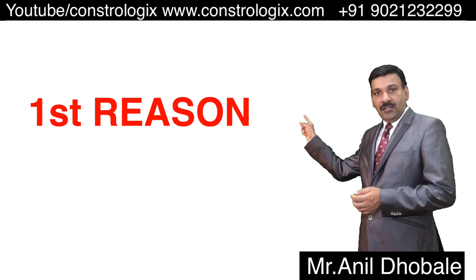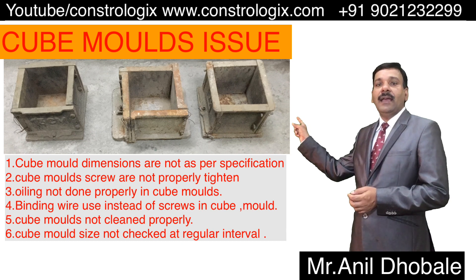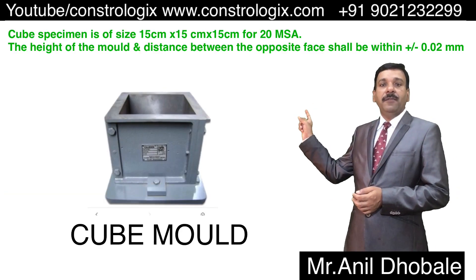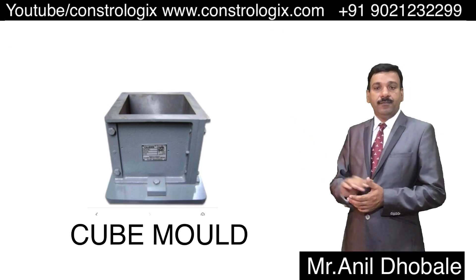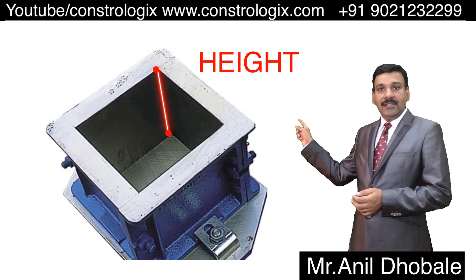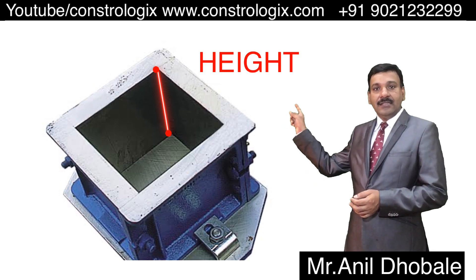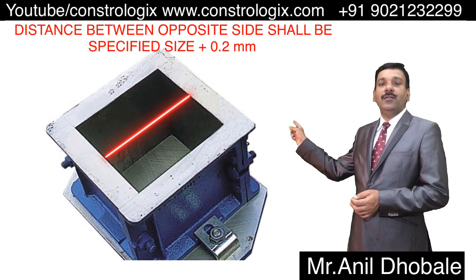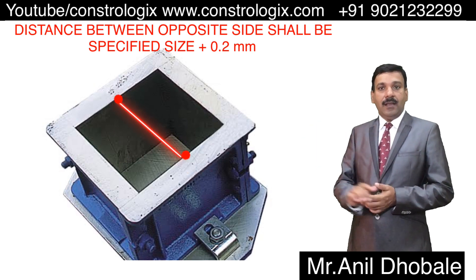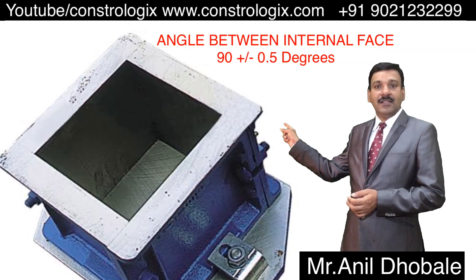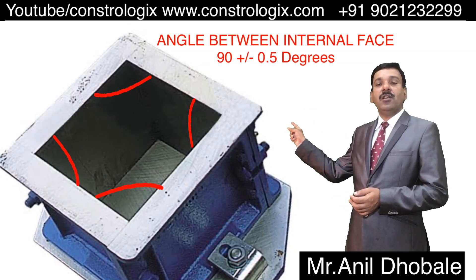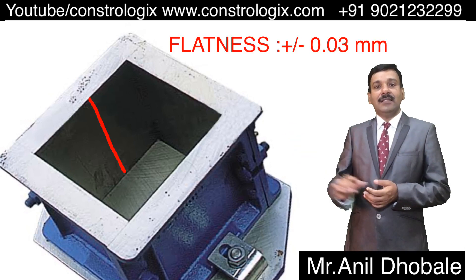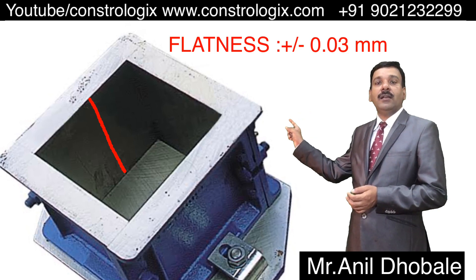First: Improper cube mold and size. The cube mold shall be preferably of metal. Height and distance between opposite faces shall be the specified size plus 0.2 mm. The angle between the internal faces shall be 90 plus or minus 0.5 degrees, and the internal face shall be within 0.03 mm.